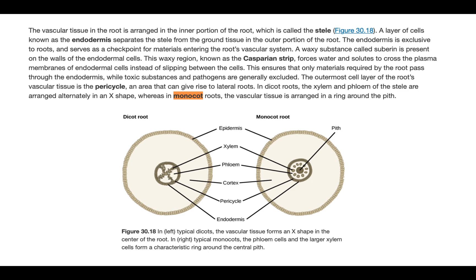Now we're going to look at the root. This is also arranged differently. If you look, the xylems are in an X fashion in the dicotyledon root, and the xylems and phloems are arranged in a circular manner around the pith in the monocot root.